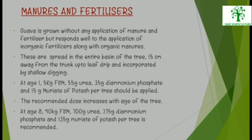Manures and Fertilizers: Guava can be grown without any application of manure and fertilizer but responds well to inorganic fertilizers along with organic manures. These are spread in the entire basin of the tree, 15 cm away from the trunk up to leaf drip. At age 1: 5 kg FYM, 55 g urea, 35 g diammonium phosphate, and 15 g muriate of potash per tree. At age 8: 40 kg FYM, 700 g urea, 275 g diammonium phosphate, and 135 g muriate of potash per tree.